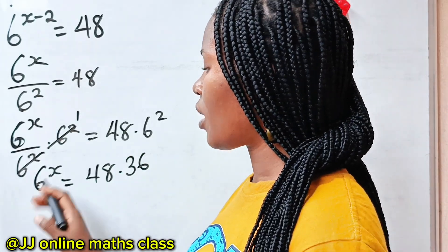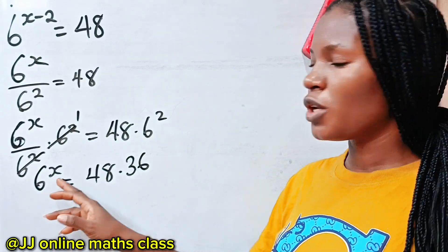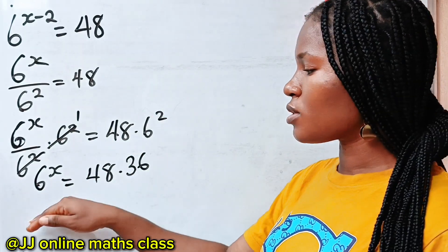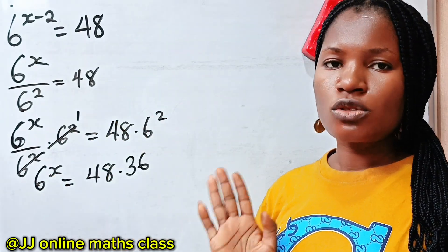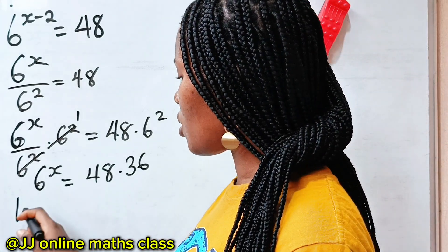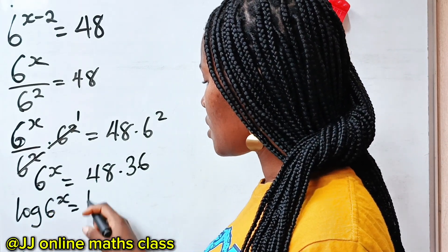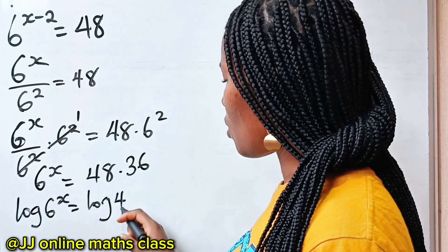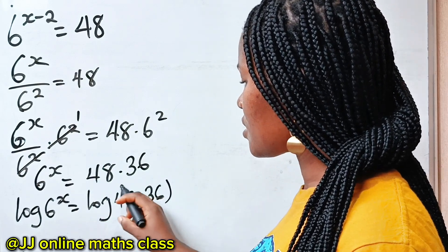Now, since x is the power here, the only way to solve this is to introduce log to both sides of this equation. So we'll introduce log: 6 to the power of x is equal to log of 48 multiplied by 36.